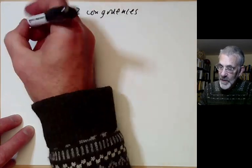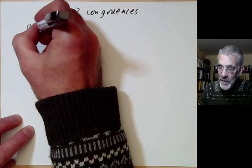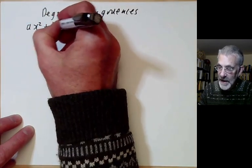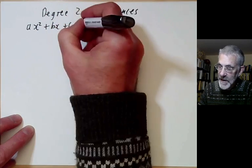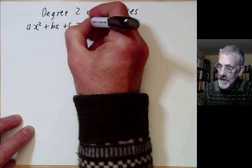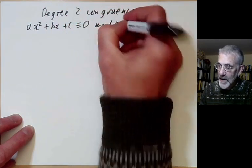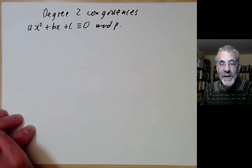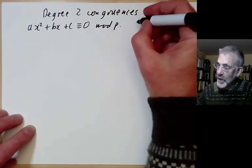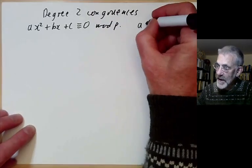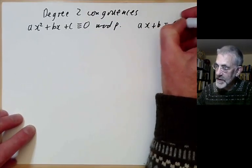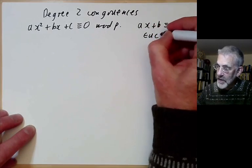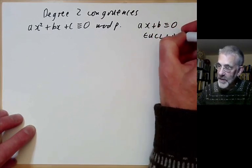We want to solve the equation ax² + bx + c ≡ 0 modulo p. We've already solved degree 1 congruences ax + b ≡ 0 by using Euclid's algorithm.